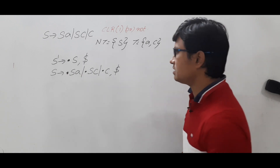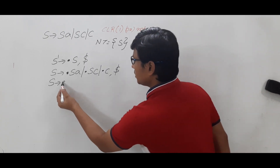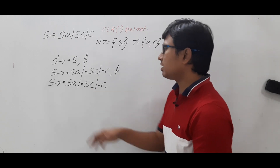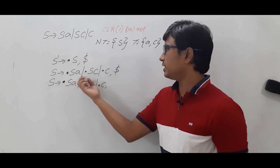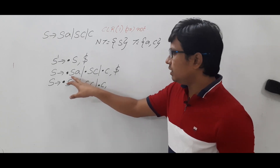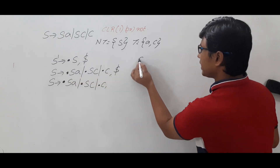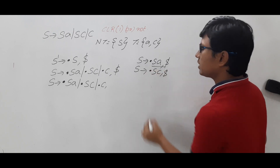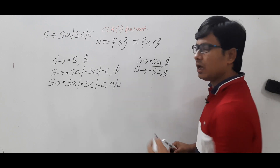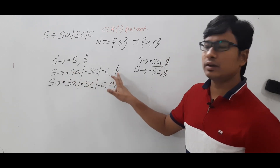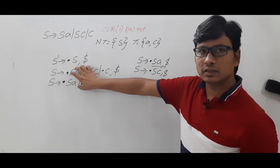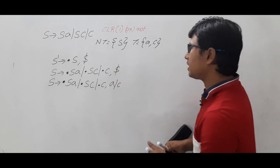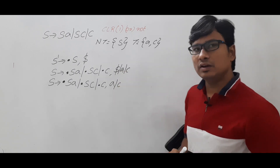After the dot there is a non-terminal S, so again I need to write the production of S and keep dot in front: S → •Sa and S → •c. Now why have I written this production — because of which S? Even if you look, there is a dot S here and a dot S there. So you need to leave the dot S and compute the first of the remaining thing. This production can be written as S' → •S a, dollar and S' → •S c, dollar. From one I get lookahead 'a', and from the other the lookahead is 'c'. So this production has lookahead dollar, and the other has lookahead 'a' and 'c'. The productions are the same but the lookahead is different, so we need to consider them — combining as dollar or a or c.